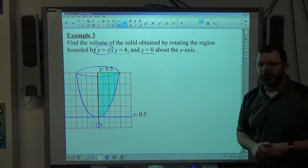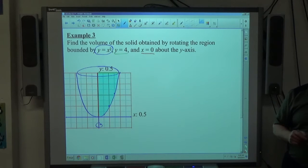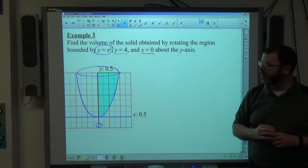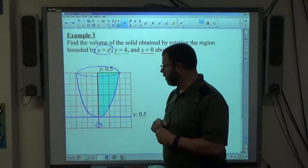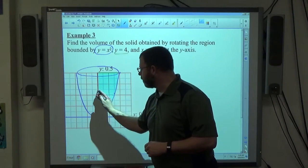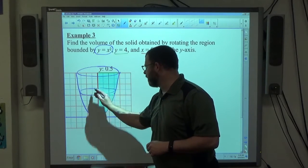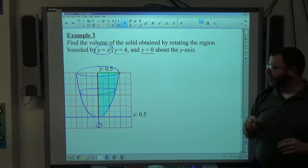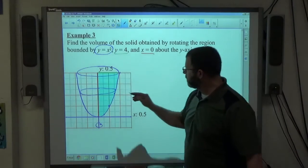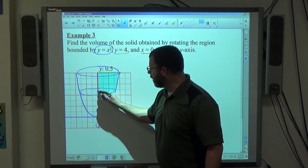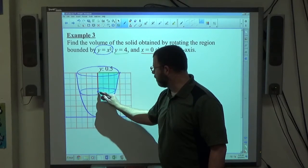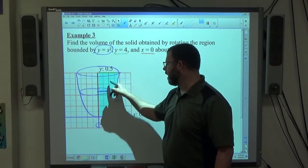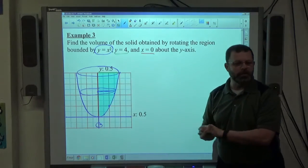If you recall back from the first day of instruction on this, we wanted to consider a circular cross section. We took a knife, we sliced this region somewhere around the middle, doesn't matter where specifically. Imagine the circular region that's created by that. There is a radius that goes from the center of rotation, the axis of rotation, out to the edge of the region. We always want to draw a radius into that region.